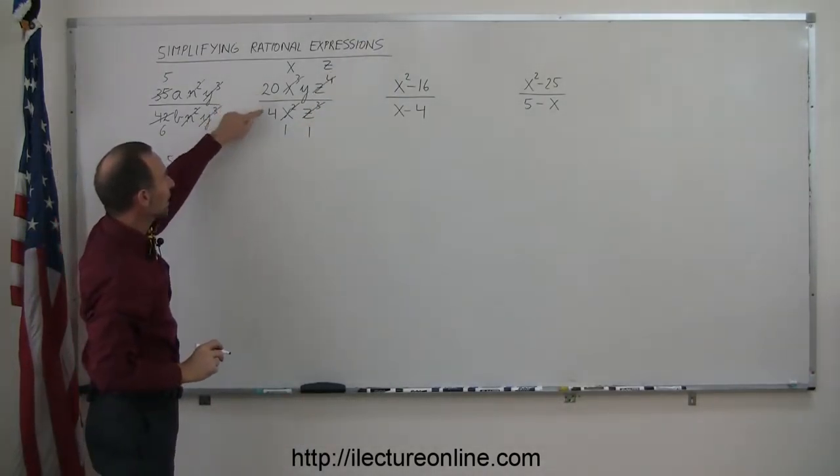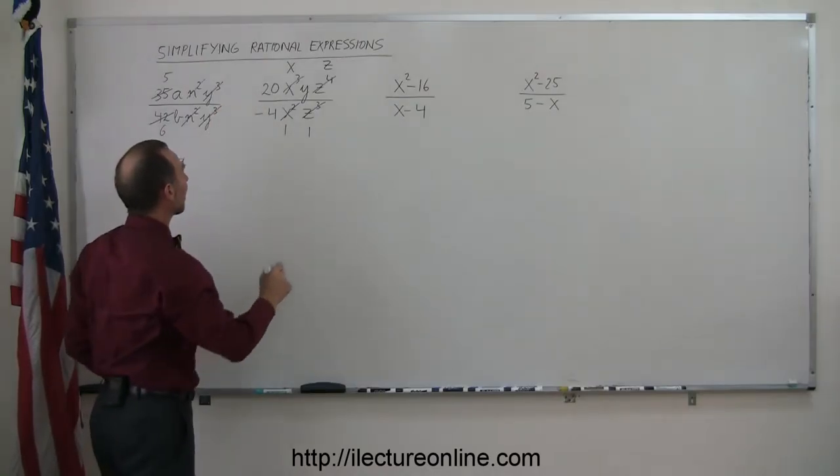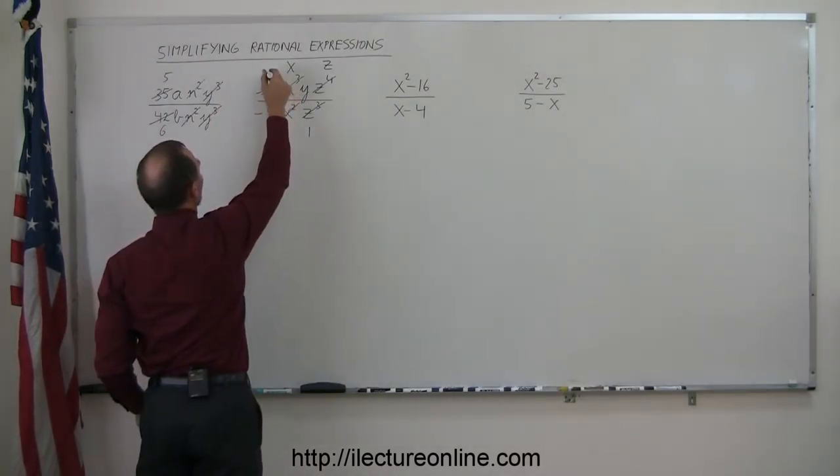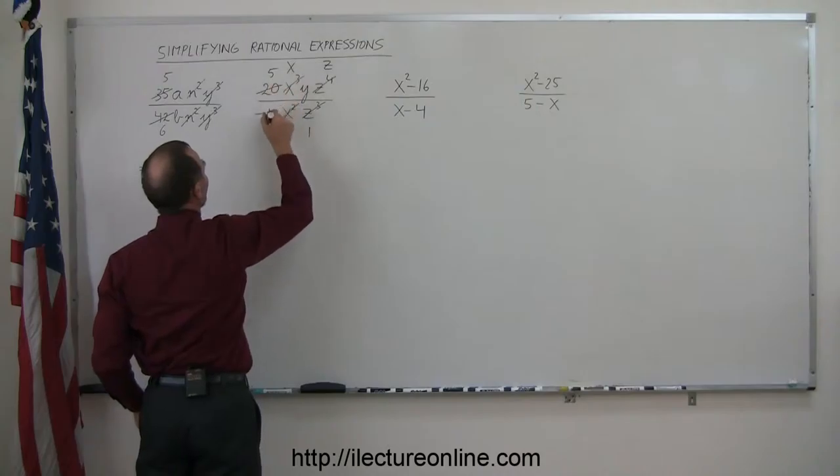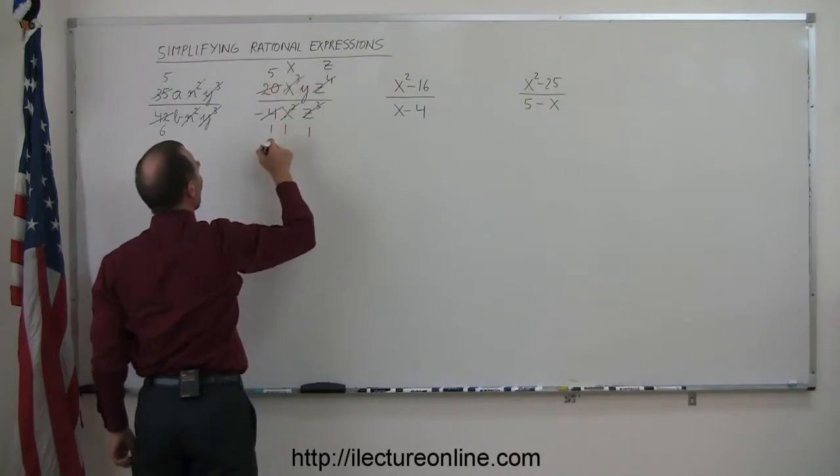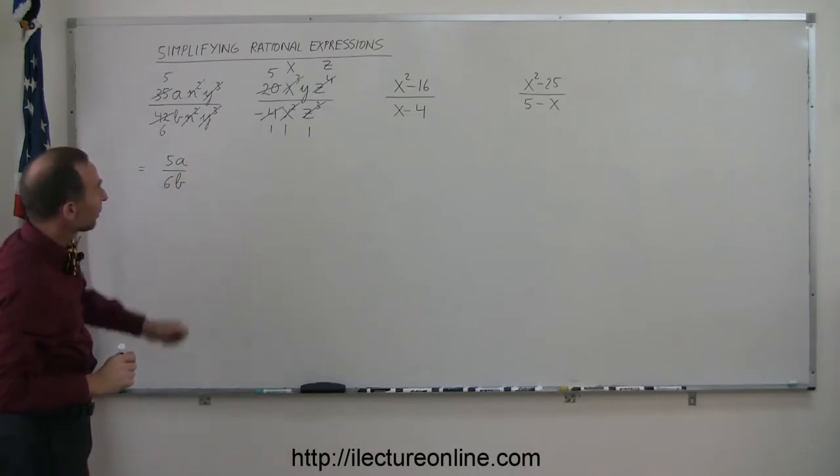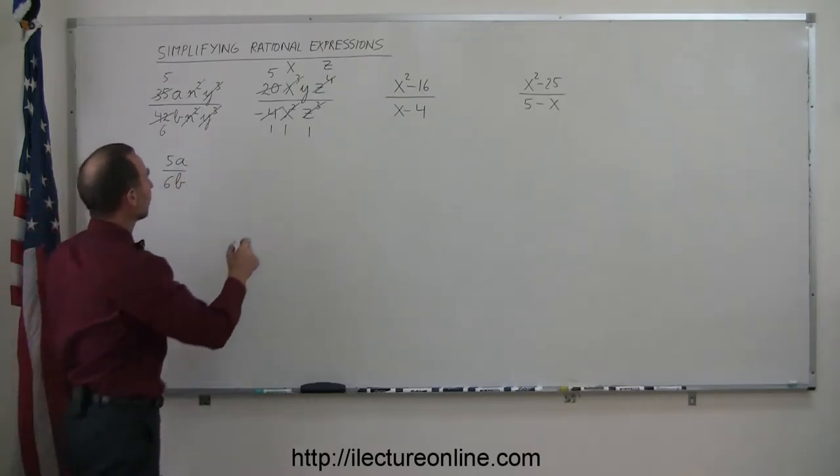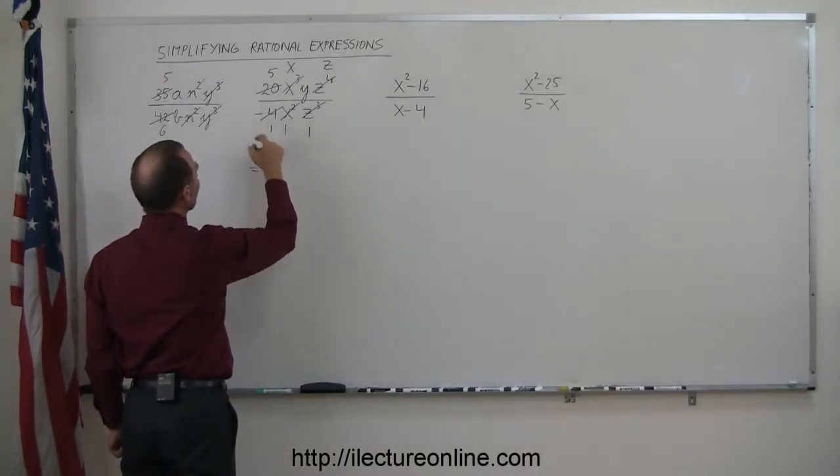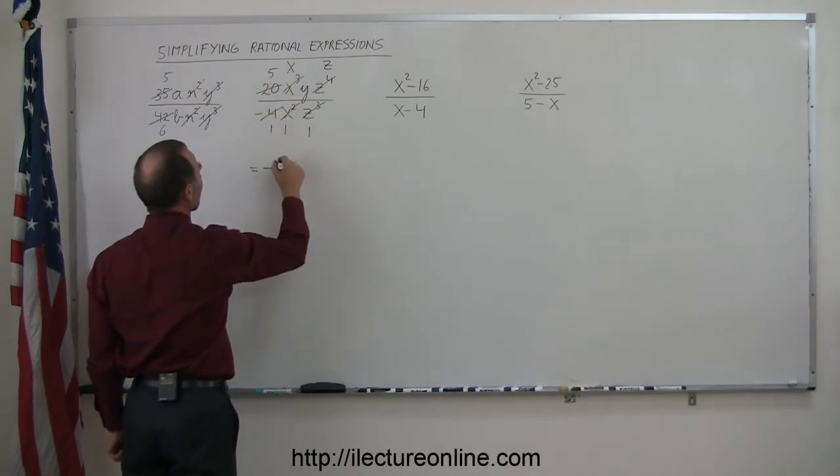Then I have a 20 and a 4. 4 goes into 20 five times. So I divide the numerator by 4, I get a 5. Divide the denominator by 4, I get a 1. I can't forget about the negative there. Now notice I have nothing but 1s in the denominator so this can now be simplified to minus 5xyz.